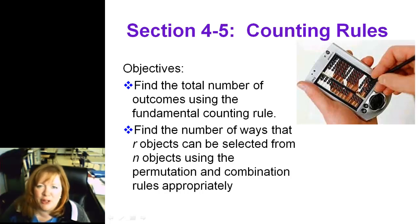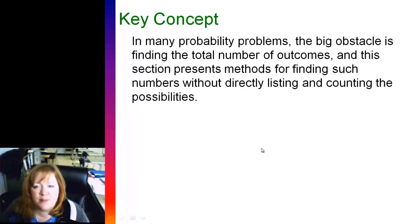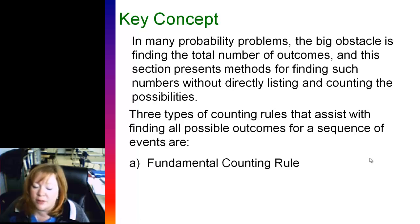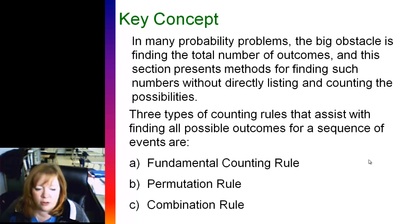Hey, howdy everybody out there in internet land. I'm back with one more section on statistics, the counting rules. We're going to be talking about finding the total number of outcomes using the fundamental counting rule, the permutation, and the combination rules. The reason for this is that many probability problems, the biggest obstacle is finding the total number of outcomes, and it's hard to count everything. So the types of counting rules that we're going to use to assist us with this are the fundamental counting rule, the permutation rule, and the combination rule.